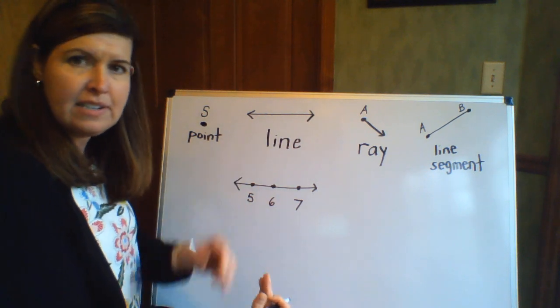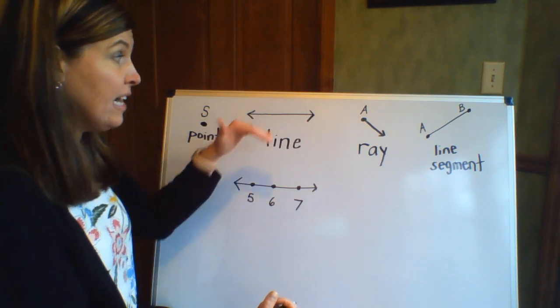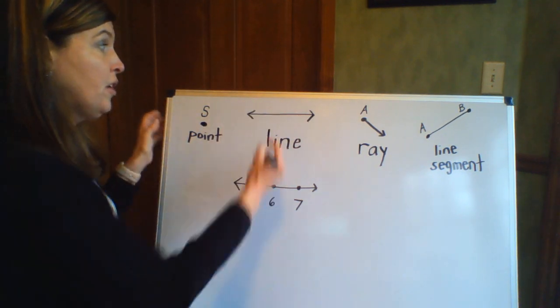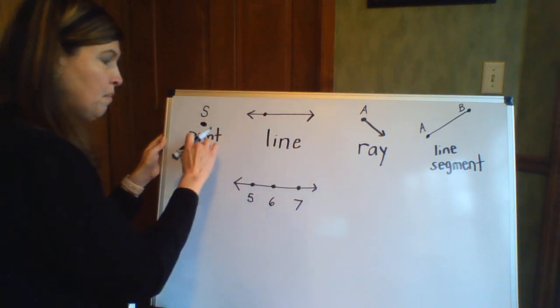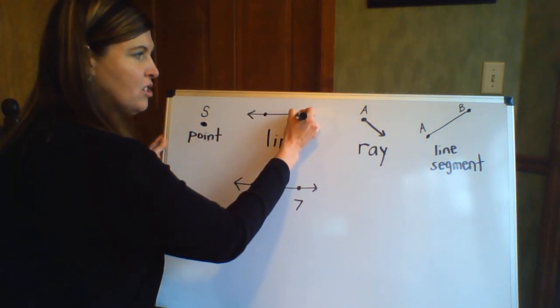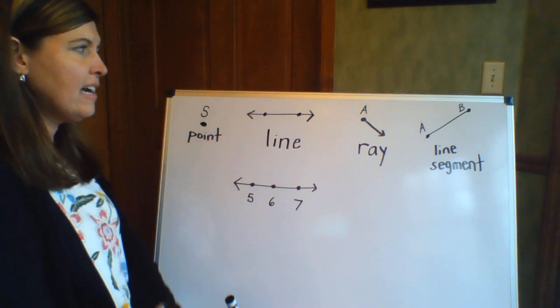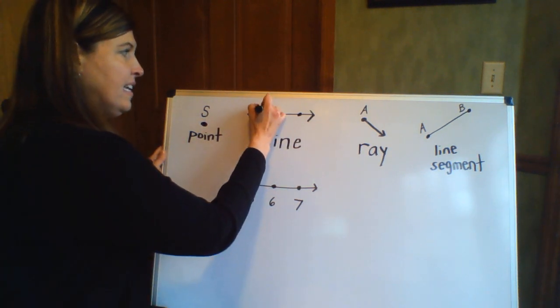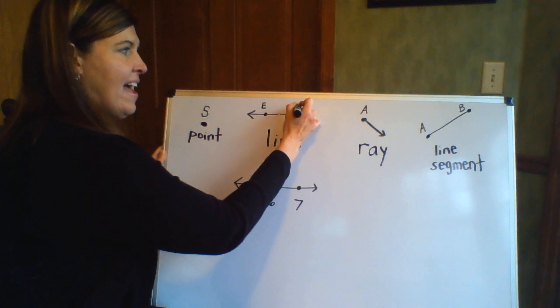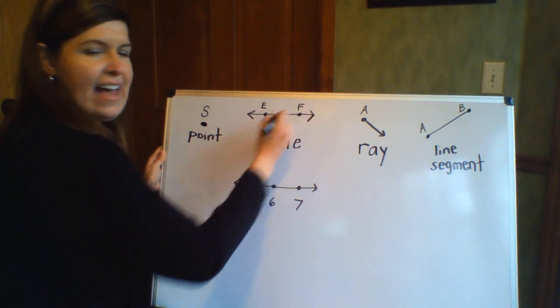So during this unit you're probably going to see things that are labeled as lines, and on the lines you will notice that there might be points on the line. So let me just show you what this line looks like. This line right here has points E and F.